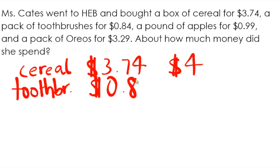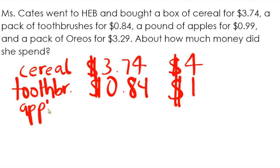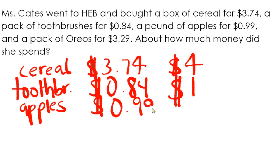She bought toothbrushes for $0.84. So I'm thinking in my head, is this closer to $0.00 or is it closer to $1.00? So $0.84 is definitely closer to $1.00. She also bought a pound of apples for $0.99 — and I already know it's only $0.01 away from $1.00, so she spent about $1.00 on that pound of apples.